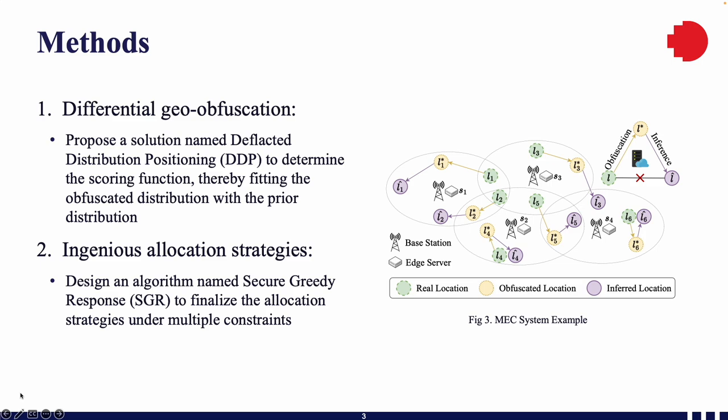To address such issues, in this work we proposed JIS, a systematic solution that addresses the LEDR problem in two phases: differential geo-obfuscation and allocation management. We first proposed a solution named the Deflected Distribution Position to determine the scoring function in differential privacy, thereby fitting the obfuscated distribution with the prior distribution. We also designed an algorithm named Secure Greedy Response to finalize the allocation strategies under multiple constraints, including privacy, energy, and system utility constraints.